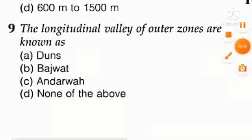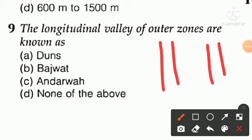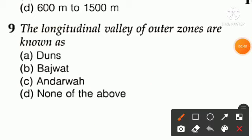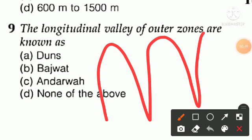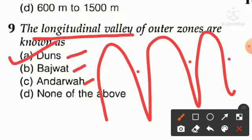Question number nine: the longitudinal valleys of the outer zones are known as what? Option A says 'doons,' option B says 'bajwad,' option C says 'underwa,' option D is none of the above. Option A is right — the longitudinal valleys are called 'doons.' Question ten: the undulating slopes between Ravi and Chenab — option B is right for that. You have to remember these local geographical terms.